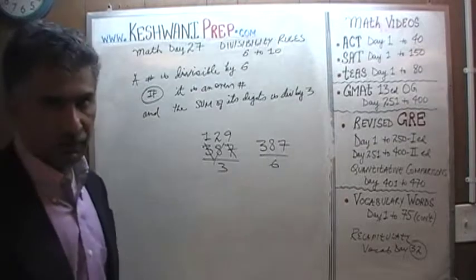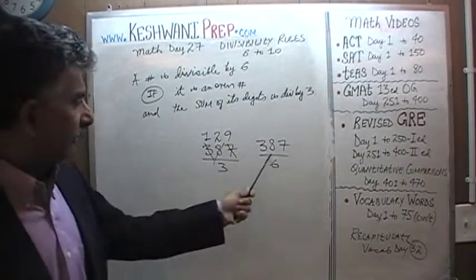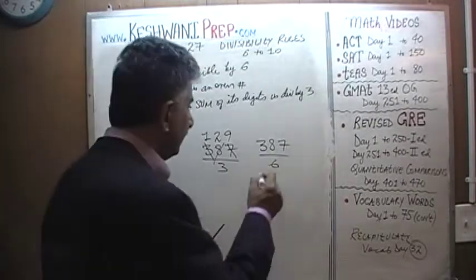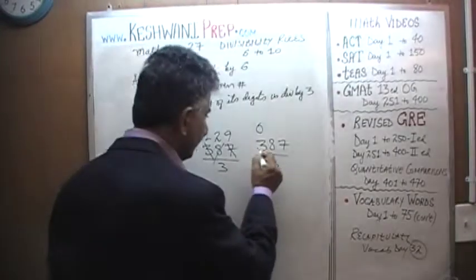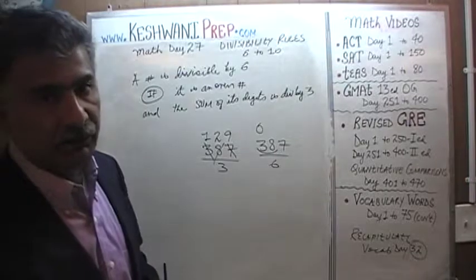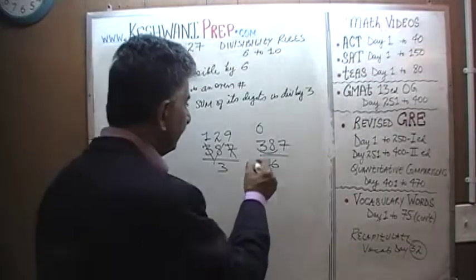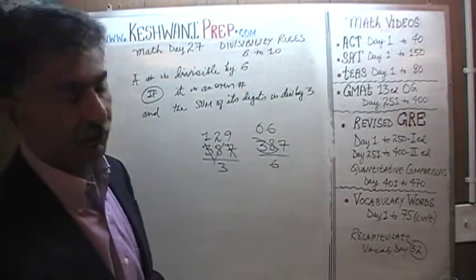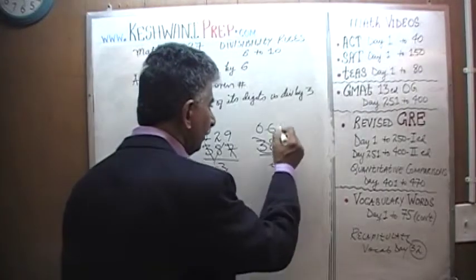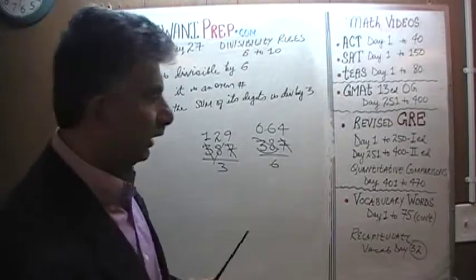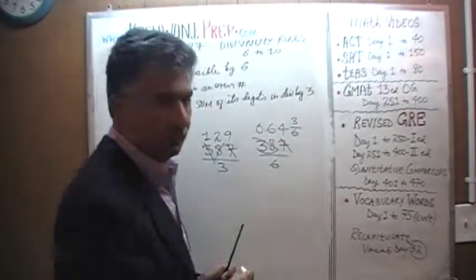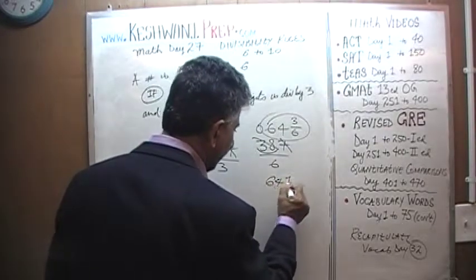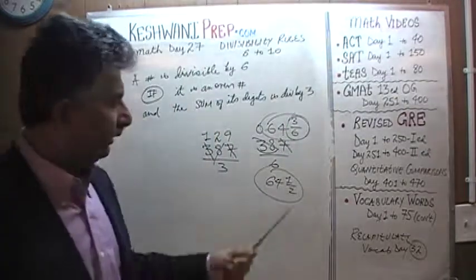387 is not divisible by 6 because it's not an even number — it's not divisible by 2. It is divisible by 3, but not by 2, so it won't divide evenly by 6. Working it out: 3 has no 6s, the 3 joins the 8 to become 38. 38 has six 6s; the remaining 2 joins the 7 to become 27. 27 has four 6s — 4 times 6 is 24 — leaving a remainder of 3. So 387 divided by 6 gives 64 and a half. It is not divisible by 6.